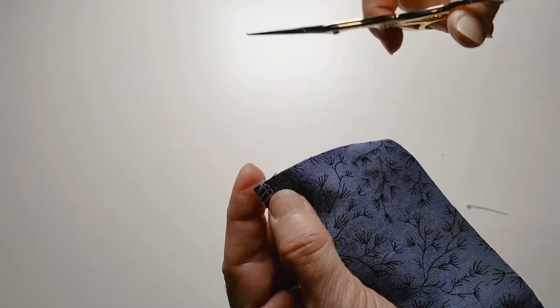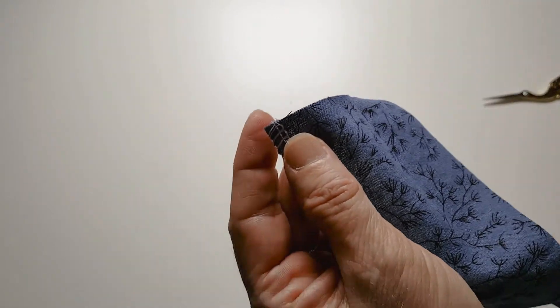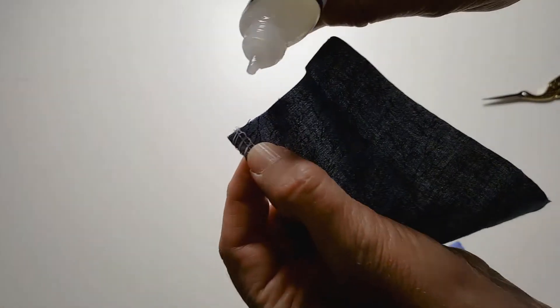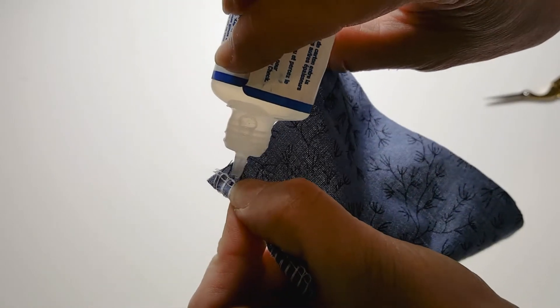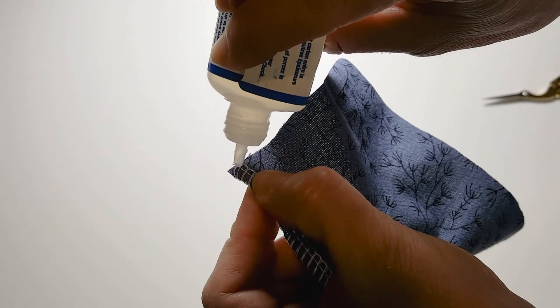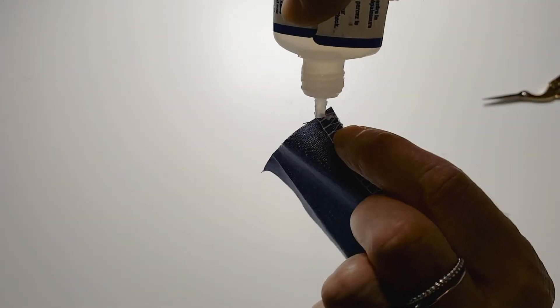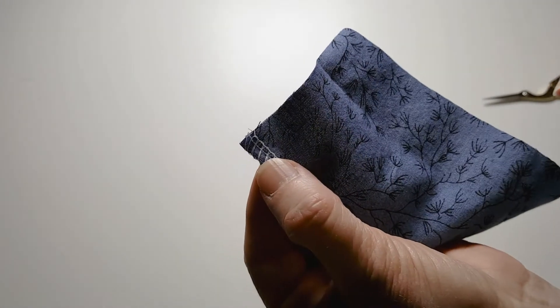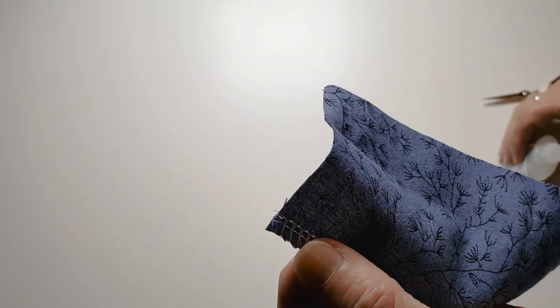The third method is probably the easiest but my least favorite. You start by snipping off your threads, then take a fabric glue - I'm using a brand called Fray Check - and simply dab it on your threads. That will hold it in position even after machine washing.